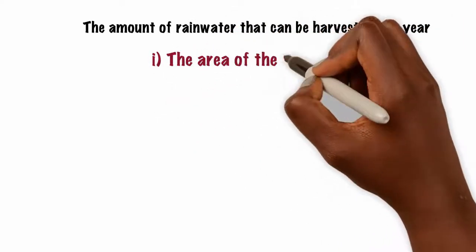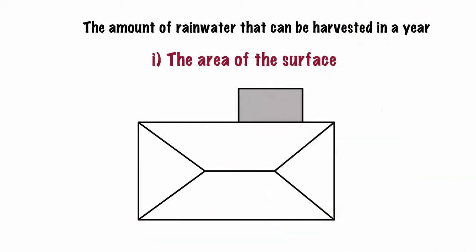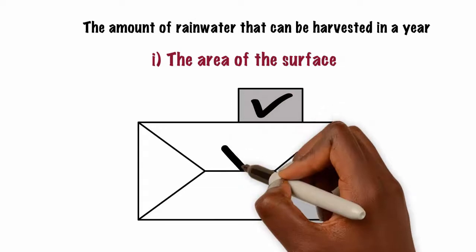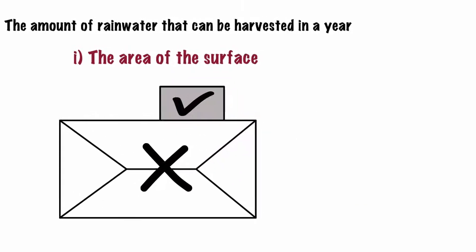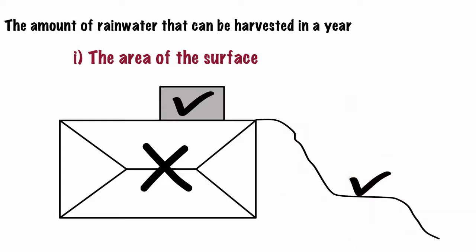First, the area of the surface on which water will be harvested from. For roofs, it is the flat area covering the roof, not the pitched area. For hilly terrains, it is the flat surface incident area upon which the rain falls.